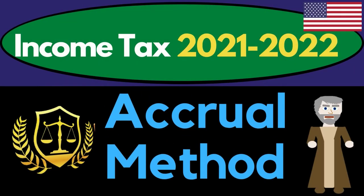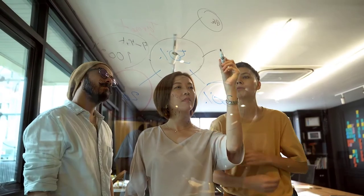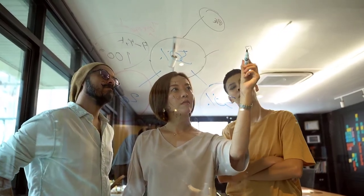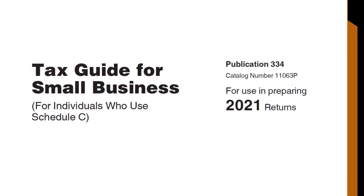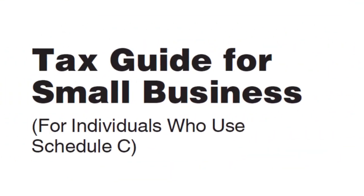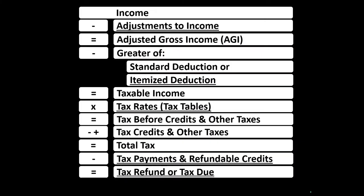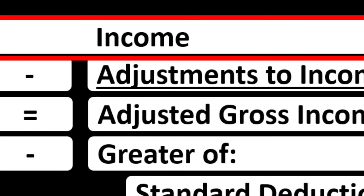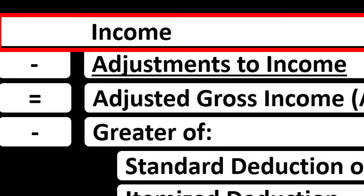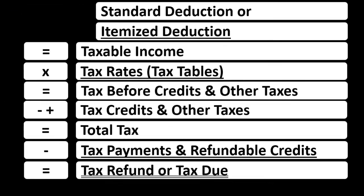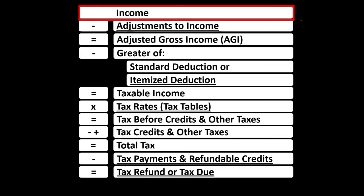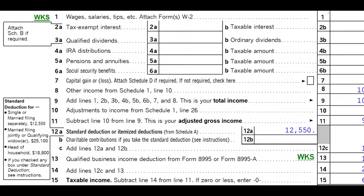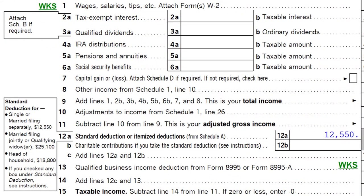Income Tax 2021-2022, Accrual Method. Get ready to get refunds to the max, diving into Income Tax 2021-2022. Most of this information can be found in Publication 334, Tax Guide for Small Business 2021. Looking at the income tax formula, the top income line, noting that we would have a sub-ledger with the income and expenses — expenses basically being deductions — the net then flowing into the top line of the income tax formula and the tax return, page 1 of the 1040.